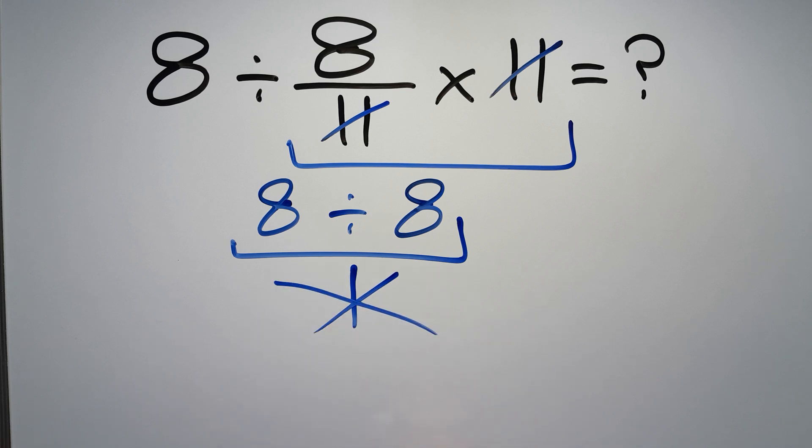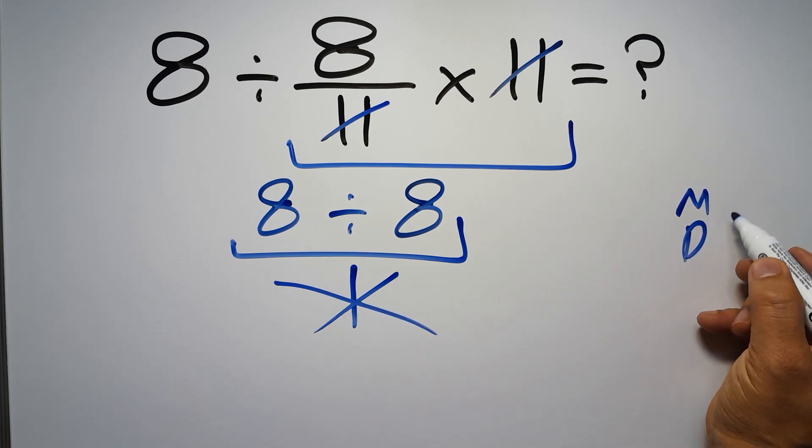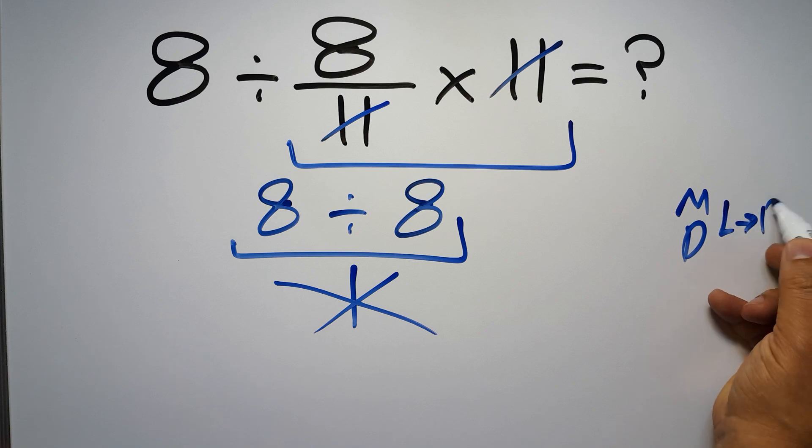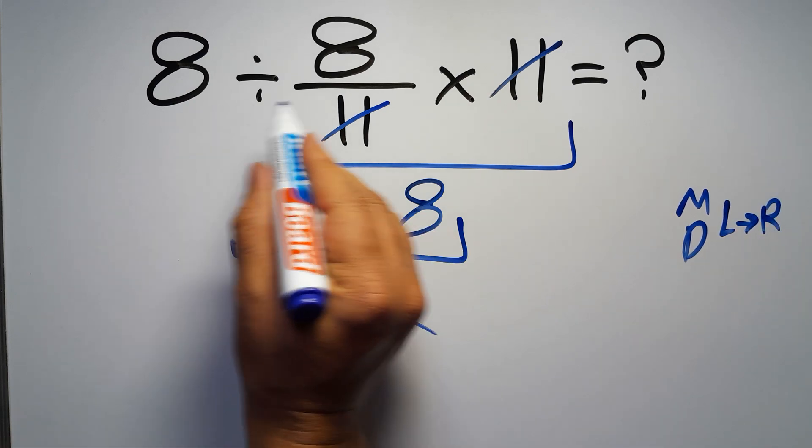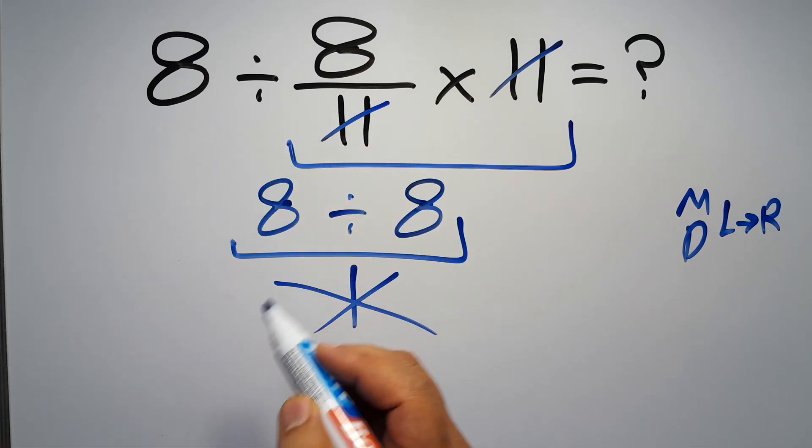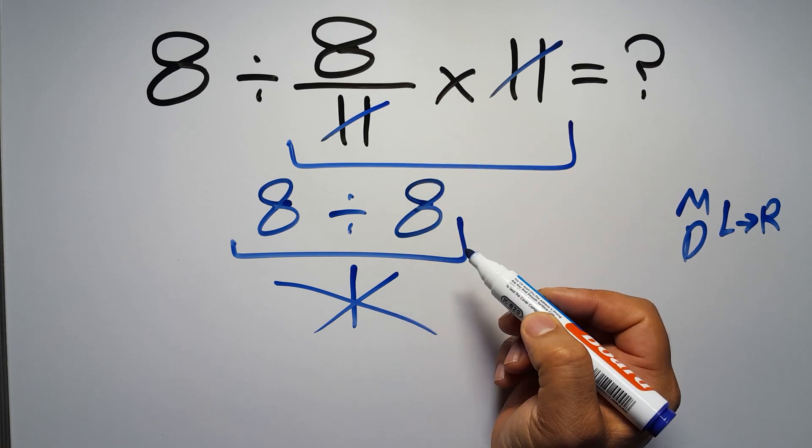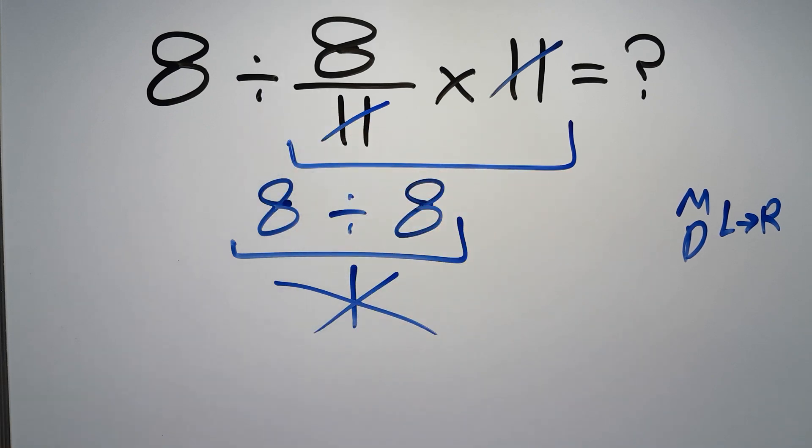According to the order of operations, multiplication and division have equal priority and we have to work from left to right. So here, first we have to do this division, then this multiplication. If we do this multiplication before this division, it is wrong.